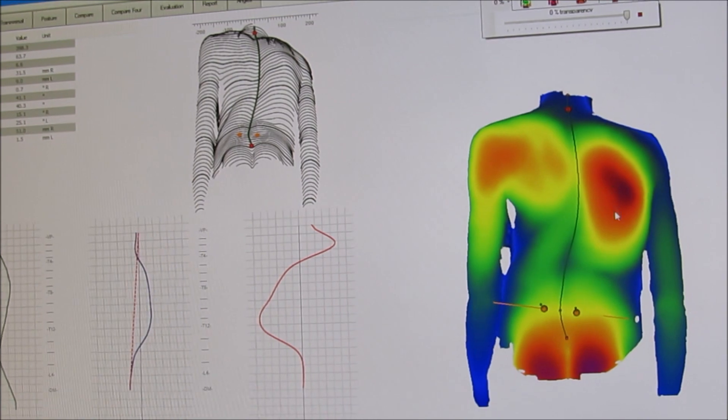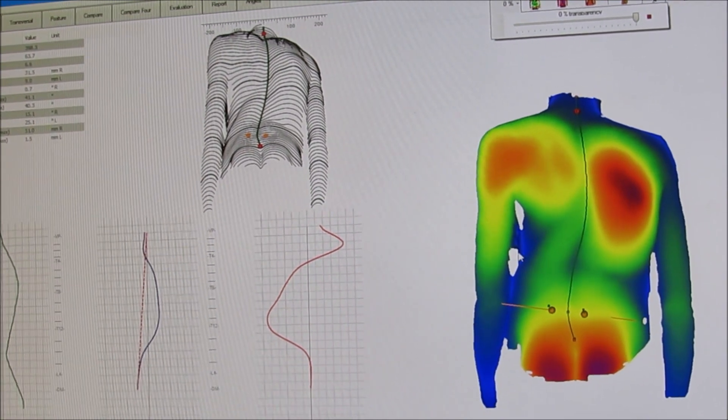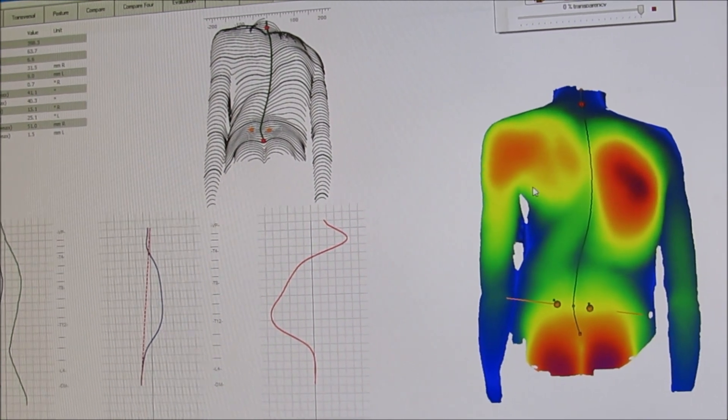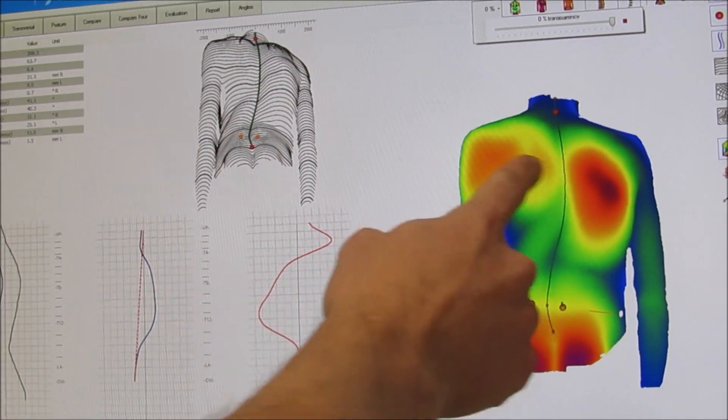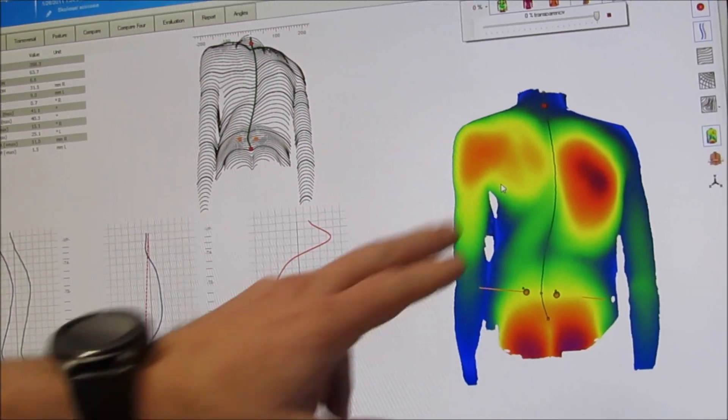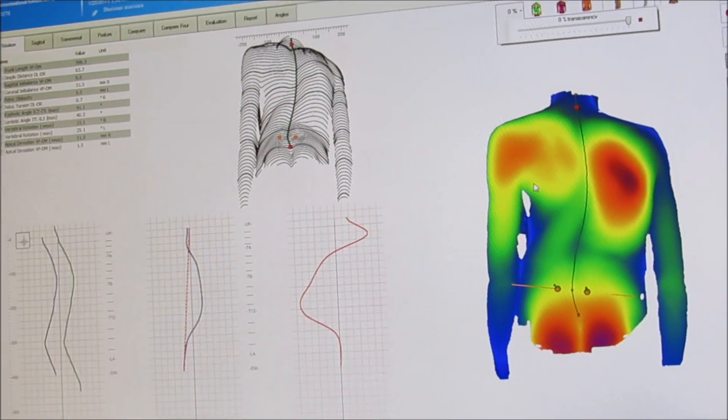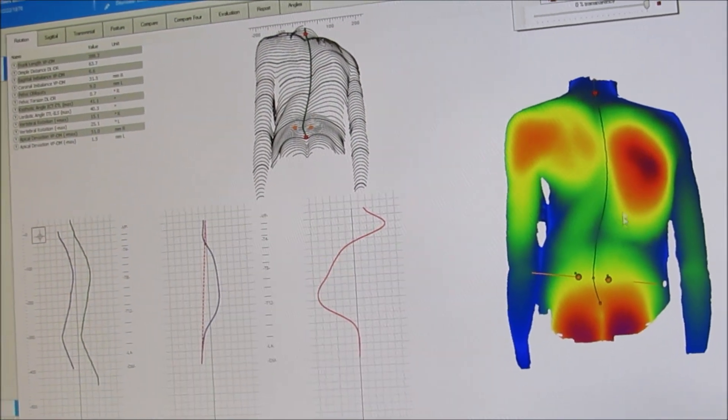So as we go to correct these with using the Schroth method or one of the other methods we use, this needs to move forward. This needs to move backward. And this shoulder needs to go forward and this shoulder needs to come backward. So it helps us to see those things.